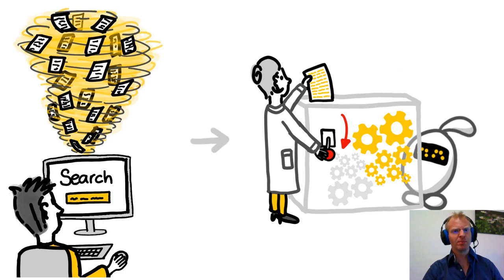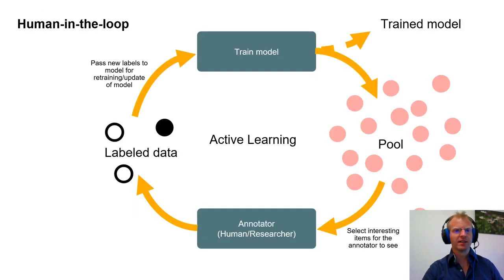We propose to speed up this process by using active learning. In human-in-the-loop applications, typically the model is trained and optimized by labeling interesting items from the pool, and usually the model itself is the primary output.